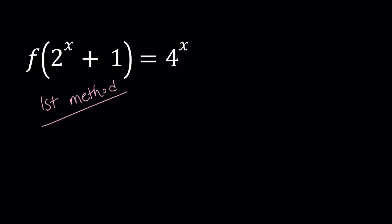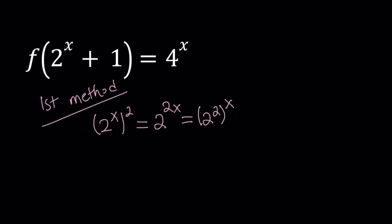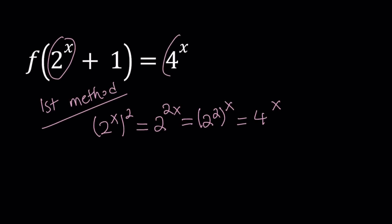For my first method, I'm going to square 2 to the power x. Using the rules of exponents, we multiply x and 2, giving us 2 to the power 2x, which can also be written as 2 to the power 2 to the power x — so that equals 4 to the power x. When I square 2 to the power x I get 4 to the power x, and notice we have both of them in our expression. That's the motivation behind this method.